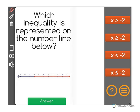Which inequality is represented on the number line below? Now as you can see, we have a line that starts at negative 2 and it goes up all the way this way.